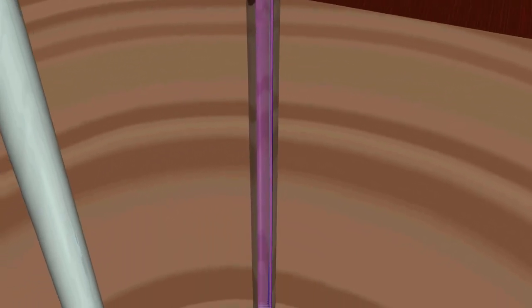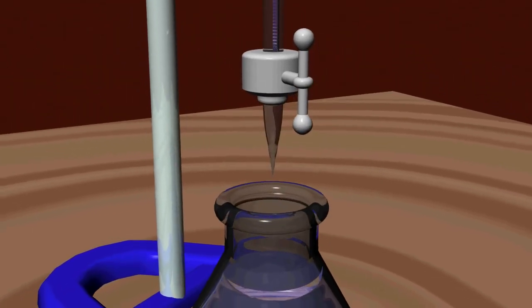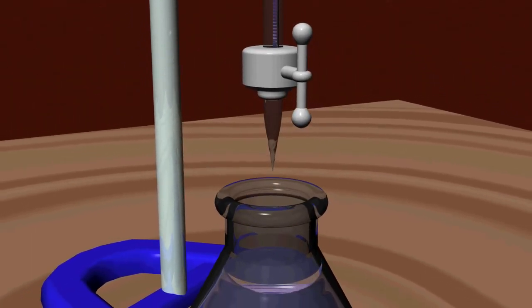Now, using the valve on the side of the burette, carefully allow the titrant to flow into the flask. While doing this, swirl the flask with your other hand.